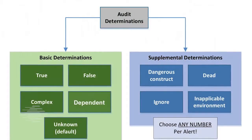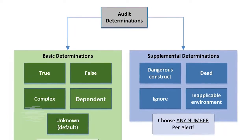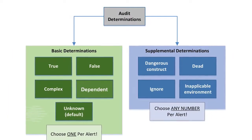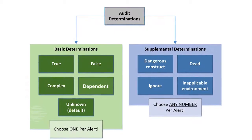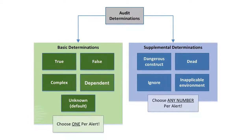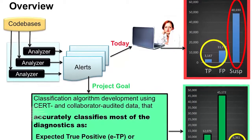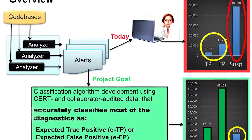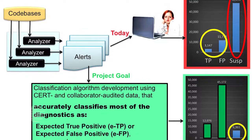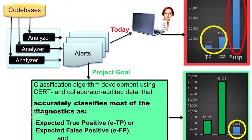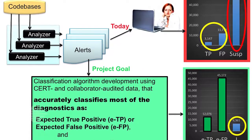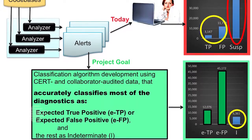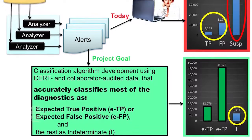The alerts and their associated code are manually examined by analysts to make an audit determination, for example, true or false positive. For most large code bases, there are too many alerts to address them all, leaving code security defects unaddressed.